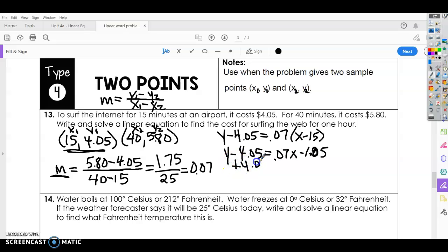Okay, so now I'm going to add my 4.05 to both sides. Y equals, left off my zero here. Alright, 0.07x, negative $1.05 plus $4.05. That is just an even three. I made that too hard.